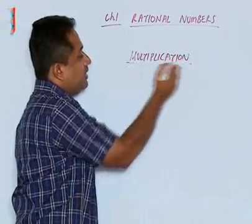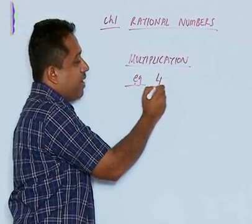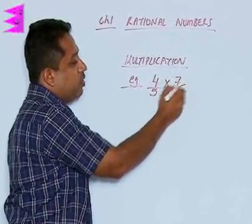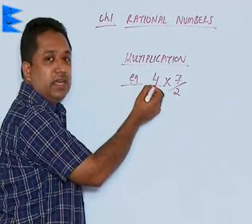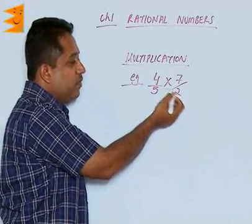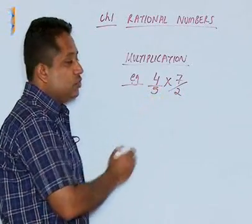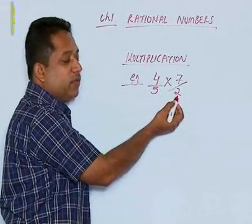We are given, let us say, multiply 4 by 5 and 7 upon 2. Here we need not take any LCM as in addition or subtraction. It is a simple case of multiplication, but what we can do to simplify things is to see whether any numerator term can be cancelled with any denominator term.